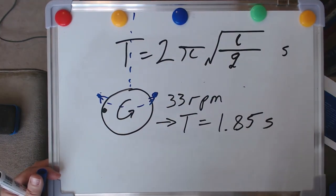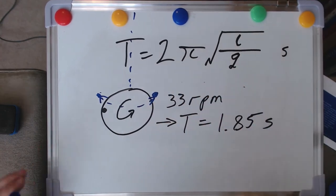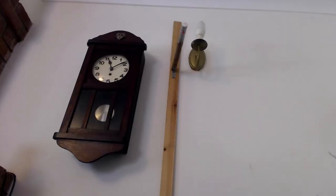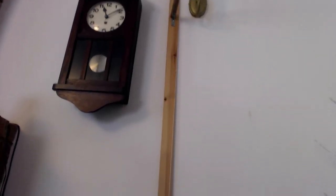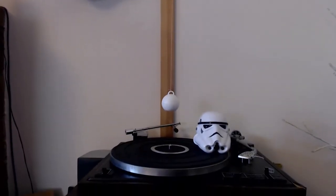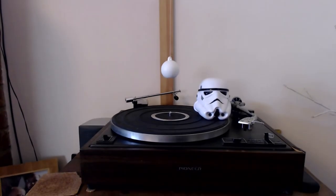Okay, so we can actually test to see whether this equation is accurate or not. So here we go, a great reveal. Something that goes around uniformly in a circle is my record turntable.